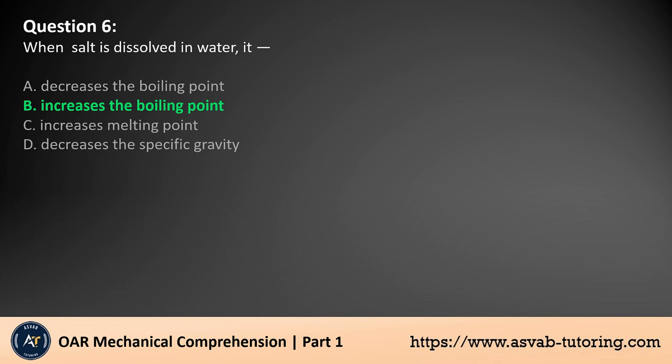When salt is dissolved in water, it increases the boiling point of the solution. This phenomenon is known as boiling point elevation. The dissolved salt ions disrupt the water molecules, making it more difficult for them to escape into the vapor phase. As a result, a higher temperature is required to reach the boiling point. This effect is commonly observed in cooking, where adding salt to water raises its boiling temperature.